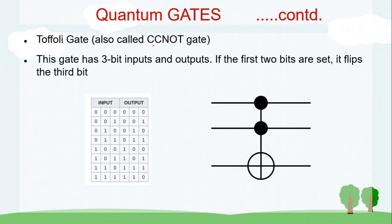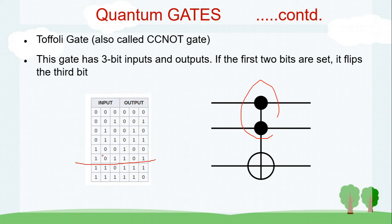The Toffoli gate is an extension of the CNOT gate. It has two control bits and one target bit, and the target bit is flipped only when both control bits are set to one. From the truth table, for all input combinations where both controls are not simultaneously one, the output is unchanged; only when both controls are one does the target bit flip — zero to one or one to zero.